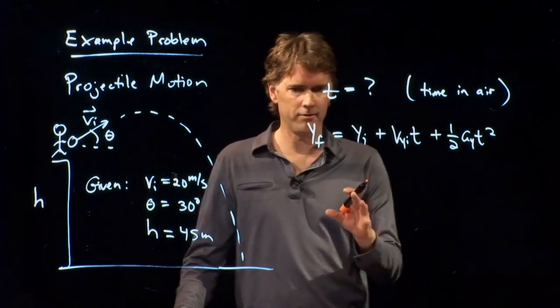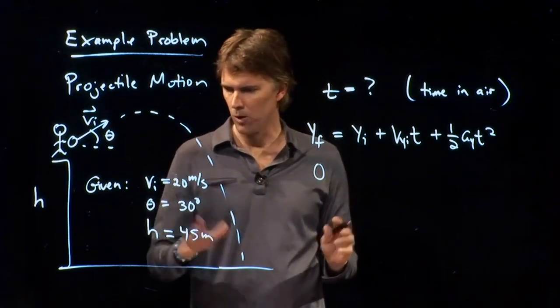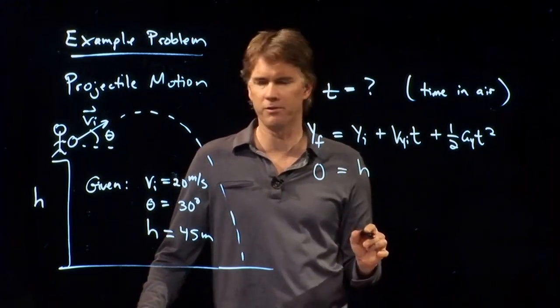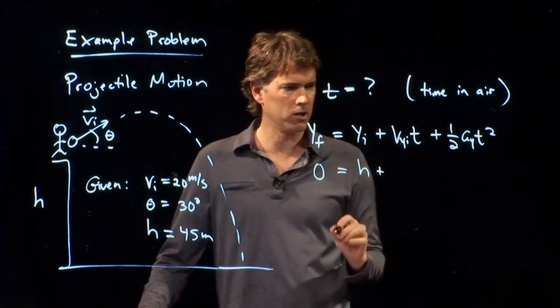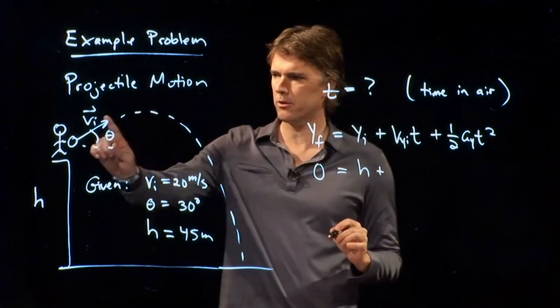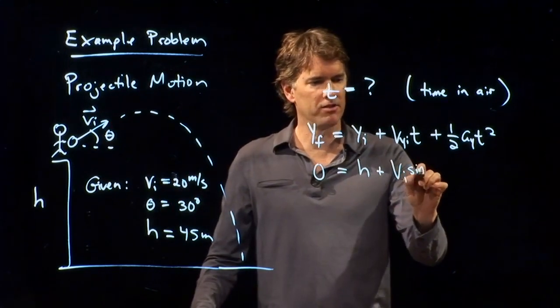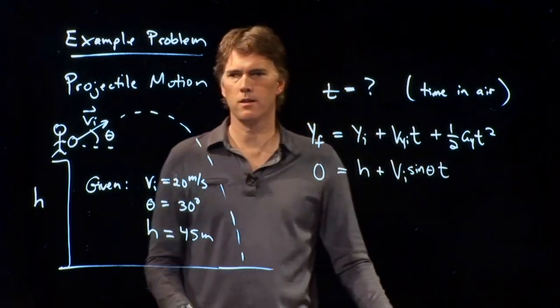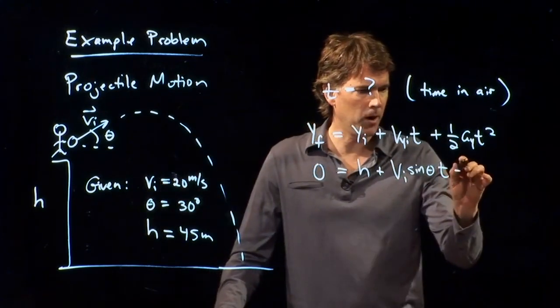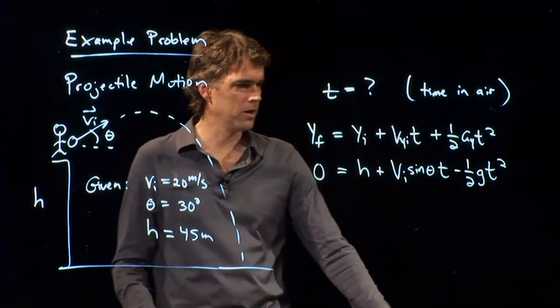Okay, that looks good. And we know a lot of this stuff, right? What's Y final when it hits the ground? Well, that's zero. Y initial is where we started from, height h. VY initial is the vertical component of the velocity, which means VI sine theta. And we know that AY is negative G.